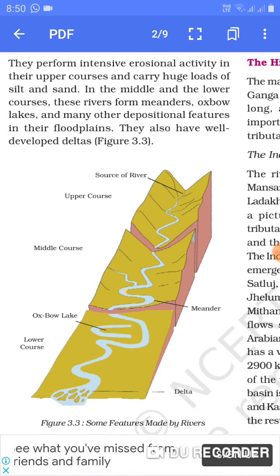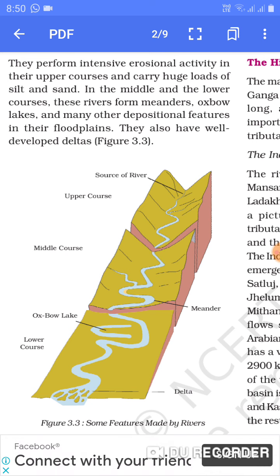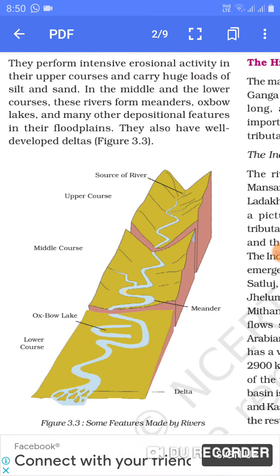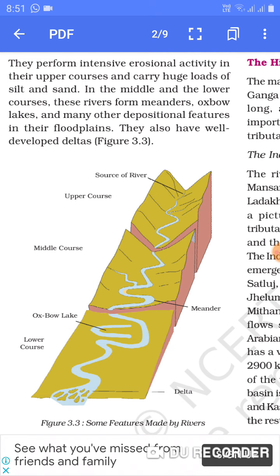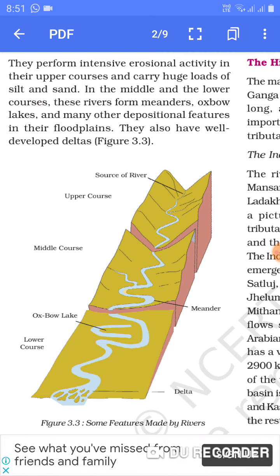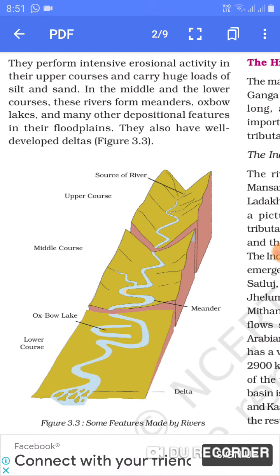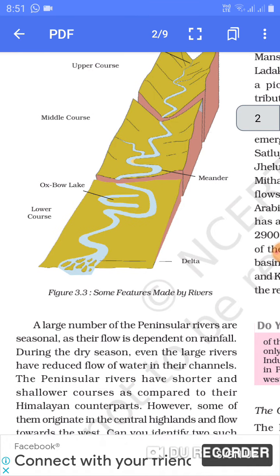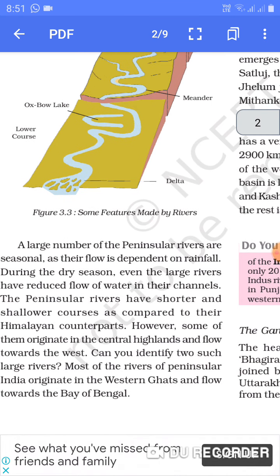In the middle and lower course, these rivers form meanders, oxbow lakes, and many other depositional features in the flood plains. Ki jo badh ke jo shetra hote hai, voha pe alag alag tarah ki akritiyan nirmit ki jaati hai. They also have well-developed deltas.